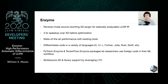By providing two packages, PyTorch Enzyme and TensorFlow Enzyme, we also let researchers not familiar with LLVM use foreign code in their ML workflows. Finally, by leveraging LLVM's support for link-time optimization, we're able to support multi-source AD as well as libraries.